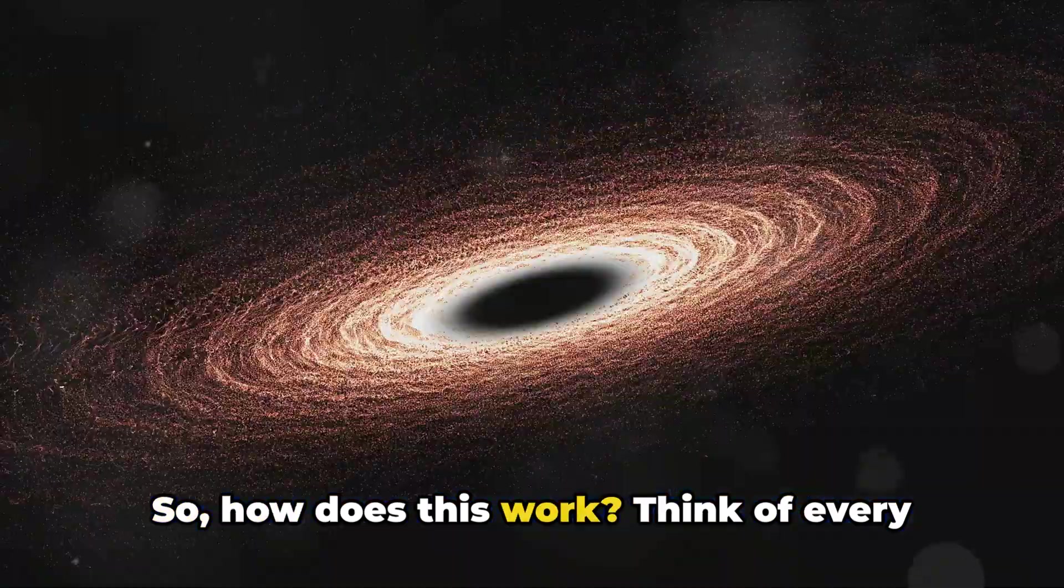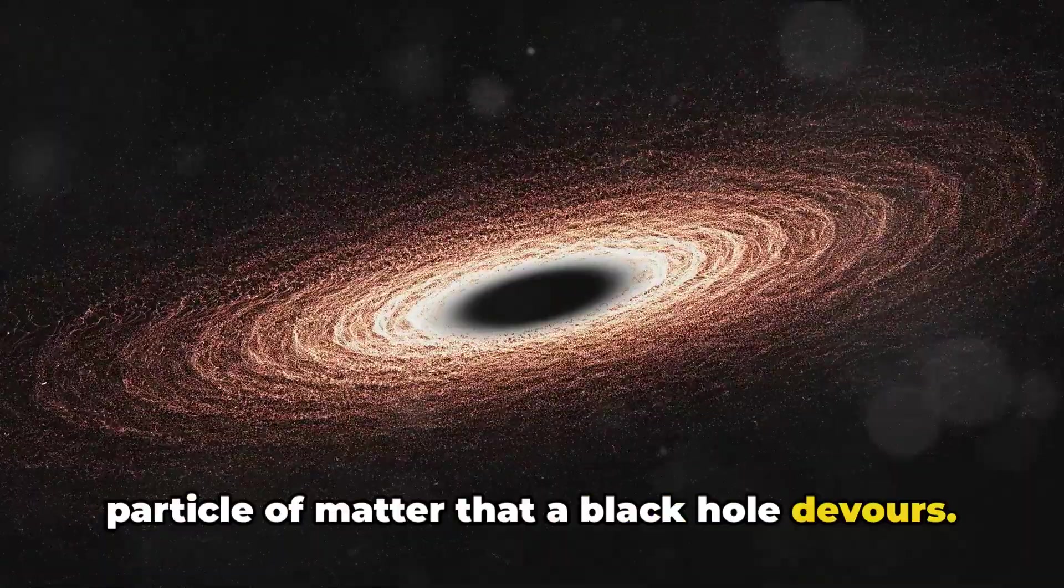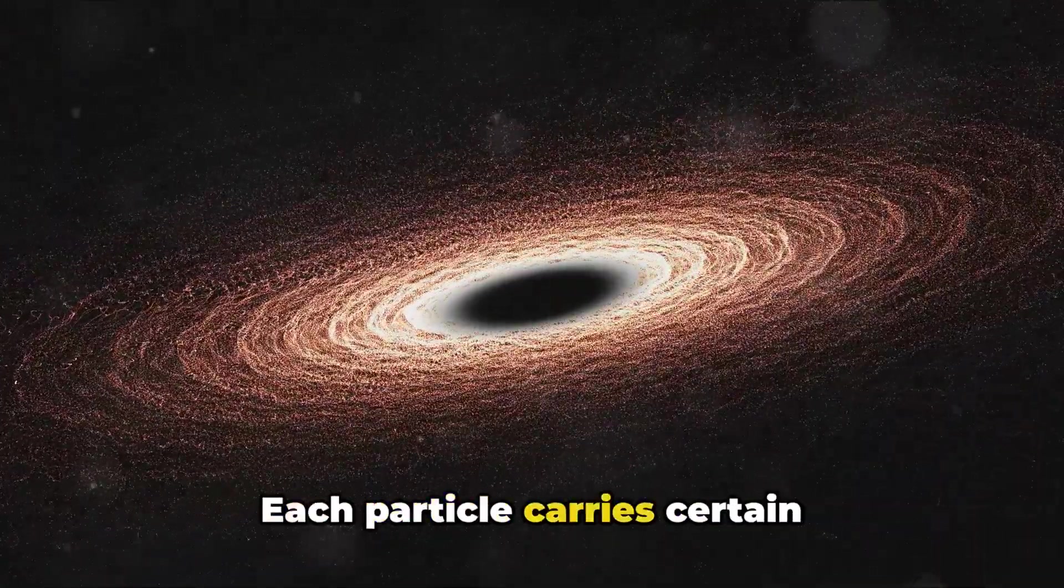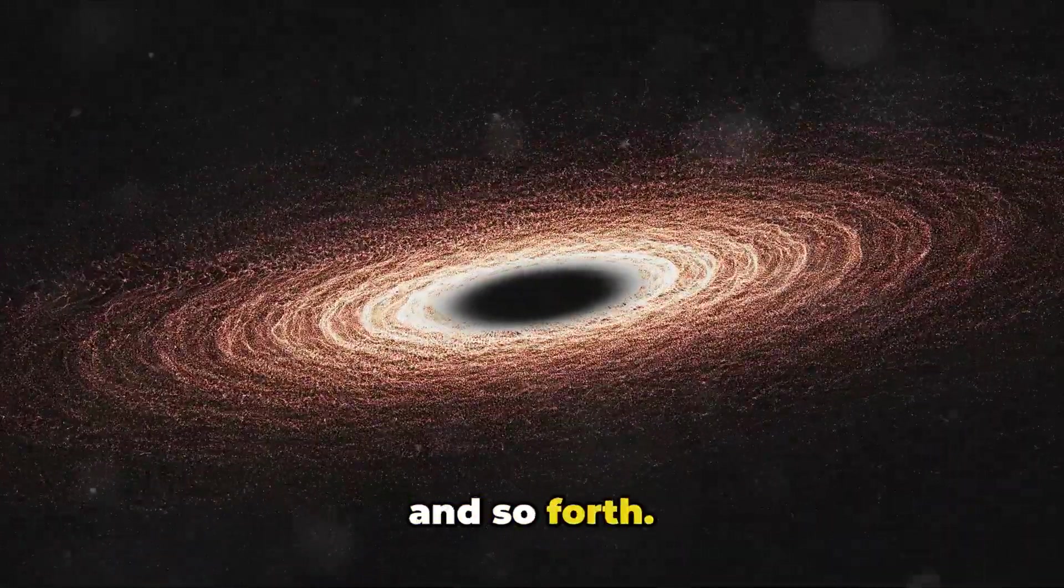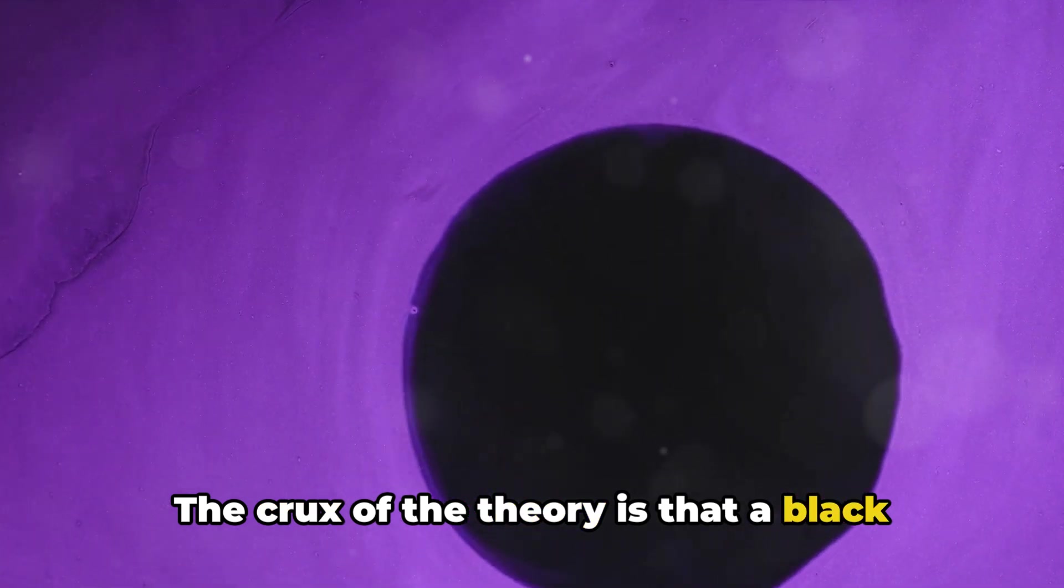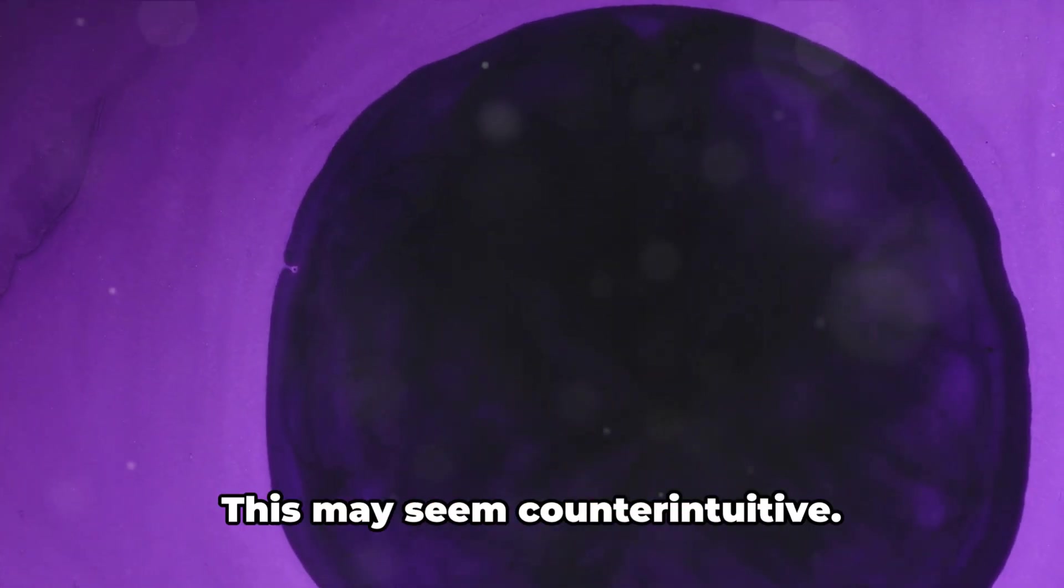So, how does this work? Think of every particle of matter that a black hole devours. Each particle carries certain characteristics: its mass, charge, spin, and so forth. The crux of the theory is that a black hole preserves this information rather than obliterating it.